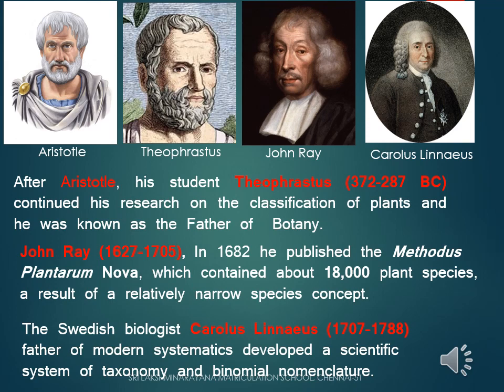Carolus Linnaeus, father of modern taxonomy and founder of modern systematics, developed a scientific system of taxonomy and binomial nomenclature. Nomenclature is the process of assigning a scientific name to each and every organism. Binomial means the scientific name consists of two words: the first word refers to the genus, and the second word refers to the species. From Aristotle to Linnaeus, scientists employed easily observable single to few traits for the classification of organisms.